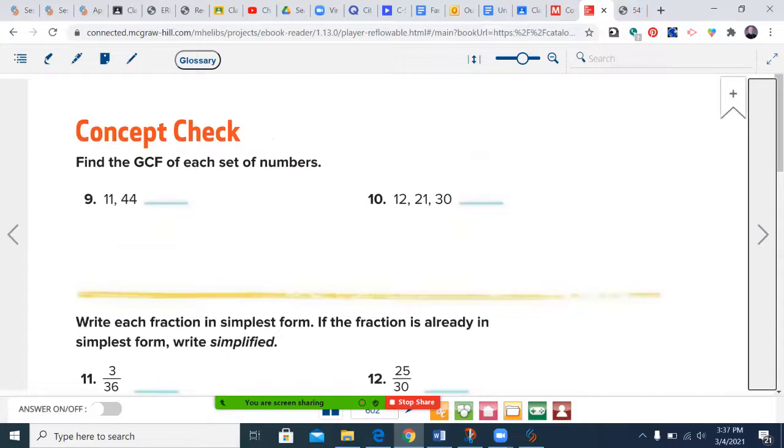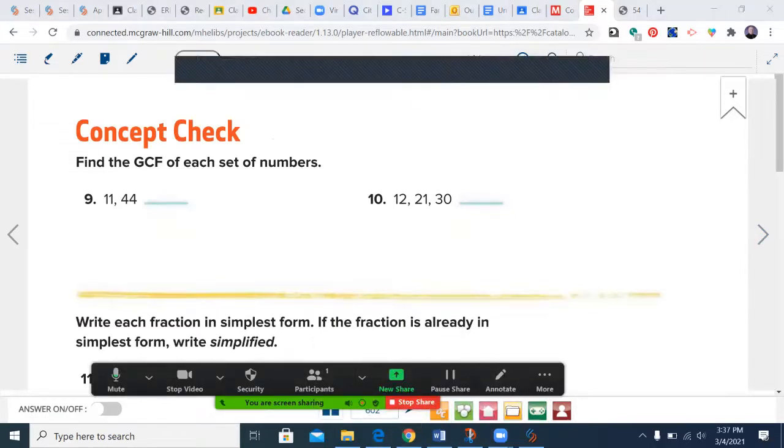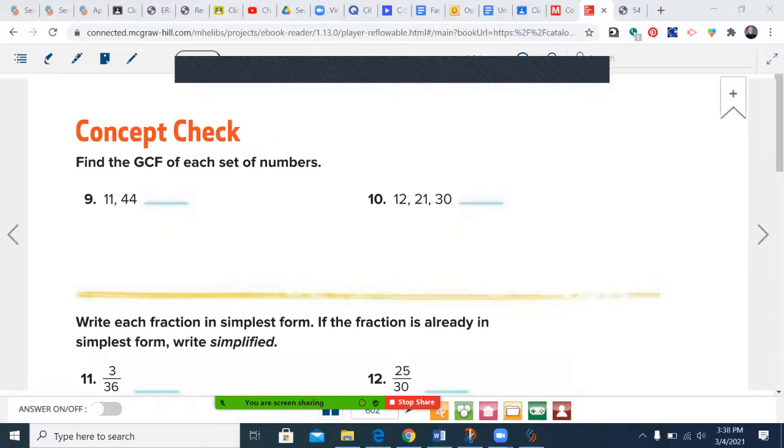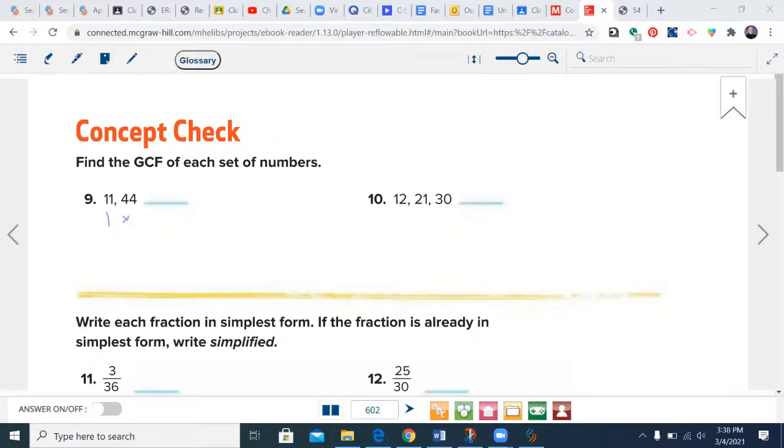Let's do a few. I'll do one and then you'll do one. I need the greatest common factor of 11 and 44. Well, I know that 11 is 1 times 11. 44 is 1 and 44, it's 2 and 22, it's 4 and 11. What's the biggest one? I have an 11, so my greatest common factor is 11.